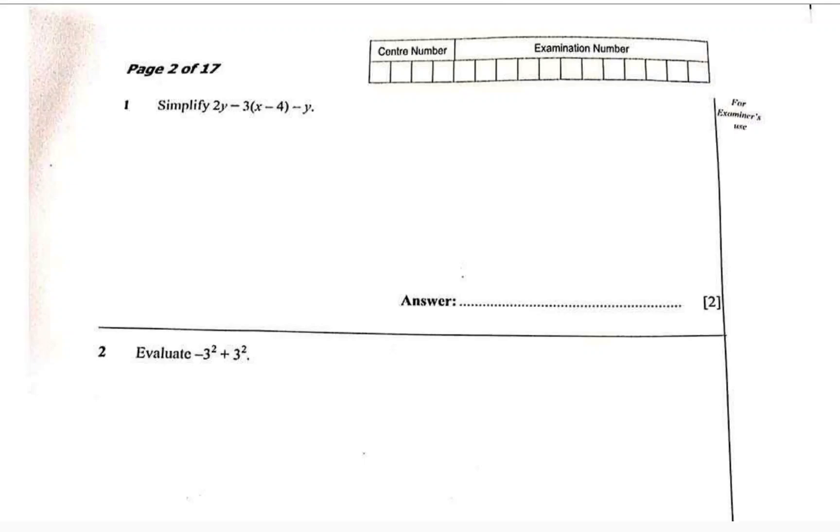All right, so look at this question that we have here - Mathematics Paper One. Simplify 2y minus 3 open brackets x minus 4 close minus y. It's a very easy question, but someone will find a reason to make a mistake here, especially when it comes to signs. Common in a simple problem, but in the exam it's something else. So first write what you have been given.